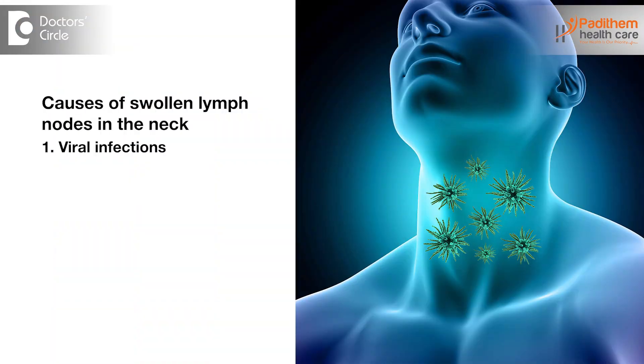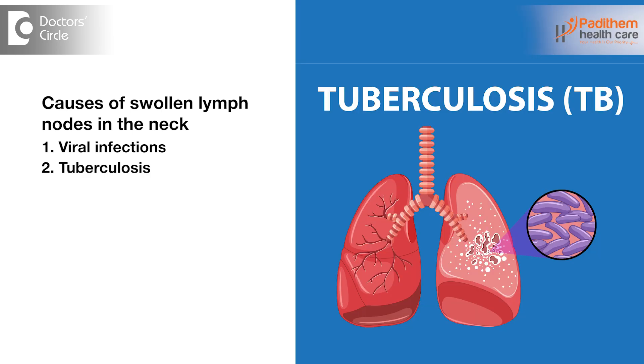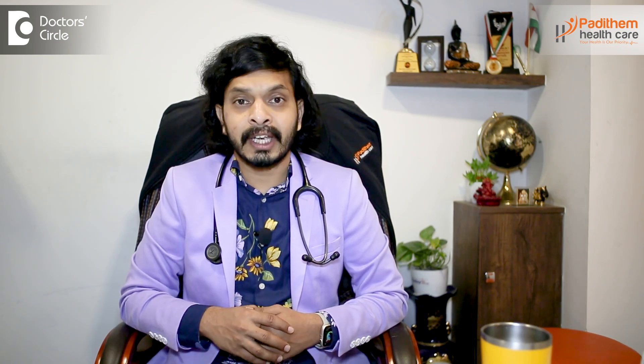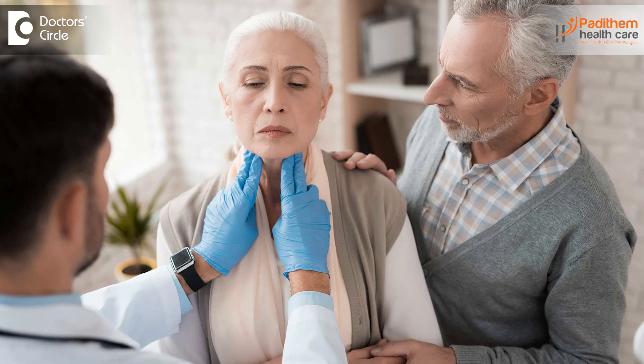Viral infections will cause an increase in the size of the lymph nodes — that is a main particular cause. The other one is tuberculosis, or TB, which also will easily increase the size of the lymph nodes, and that is definitely a sign of infection. In certain diseases only a single or double lymph nodes will be enlarged, but in certain diseases many lymph nodes are enlarged, which we have to very carefully examine, and you have to go to your doctor to get it examined.